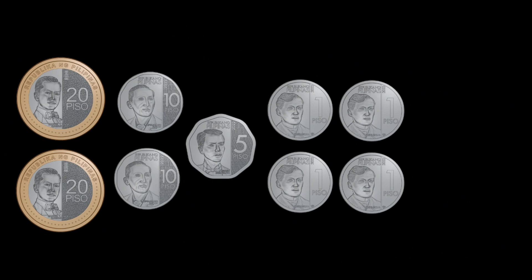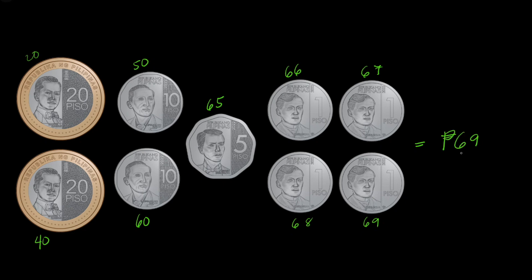By skip counting: 20, 40 — then by 10s: 50, 60 — then 65 — and then for one-peso coins we just add: 66, 67, 68, and 69. So we know that this is equal to 69 pesos.